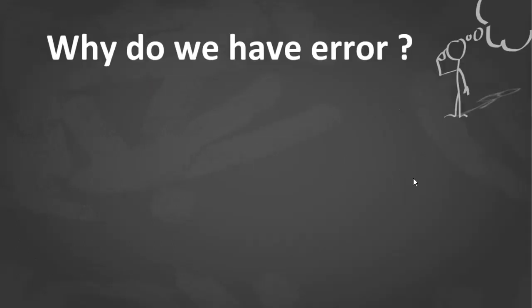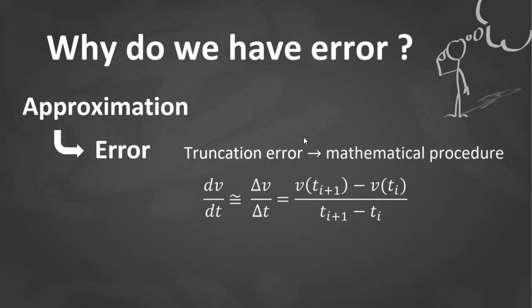The question now is why do we have error? The short answer is this word: approximation. Numerical errors arise because we use approximations to represent exact mathematical operations and exact mathematical quantities.